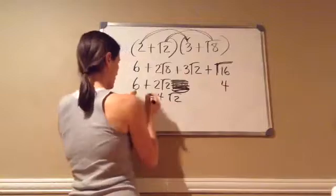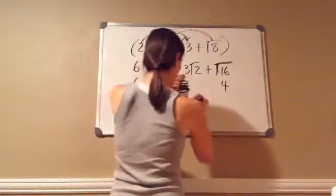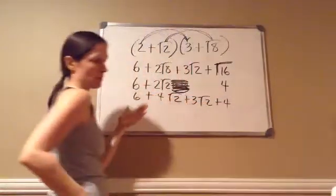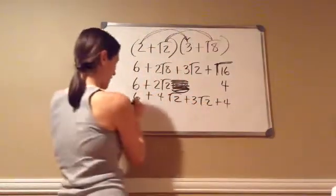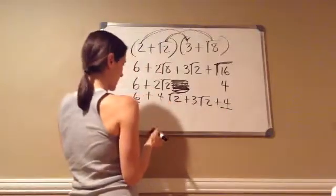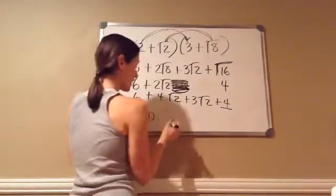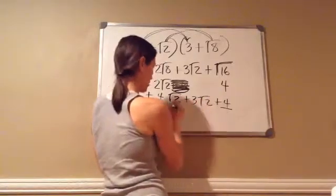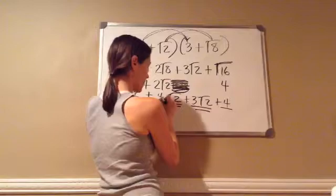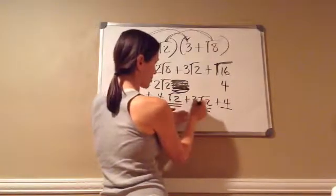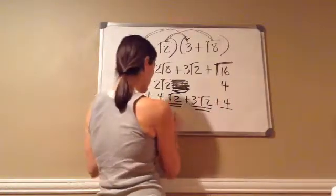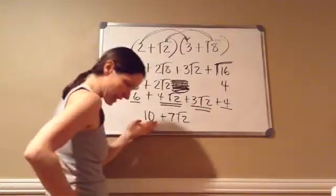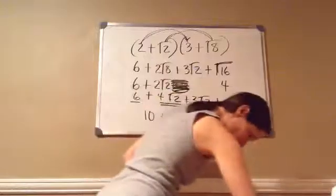I'm going to bring everything else down: this 3 square root of 2, and then this answer 4. Now I'm going to add like terms. A number and a number are two of my like terms. 6 plus 4 is 10. And then 4 square root of 2 plus 3 square root of 2 — those are like terms. This would be like 4 cats plus 3 cats, so this would be 7 cats. Final answer would be 10 plus 7 square root of 2.